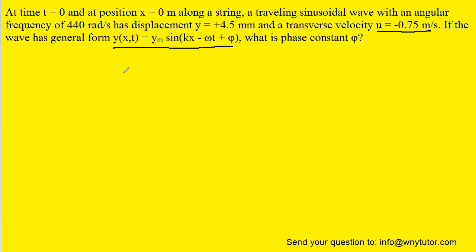Admittedly, the question doesn't directly say to calculate the derivative, but if it gives you a position function and then the value of a velocity, that's an indication that you have to change your position function into a velocity function. So we'll take the derivative, and y of xt would become u of xt.